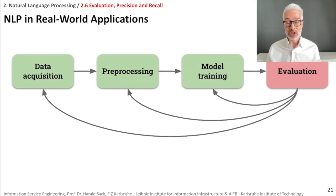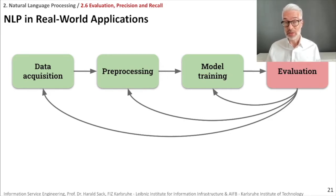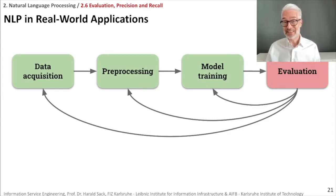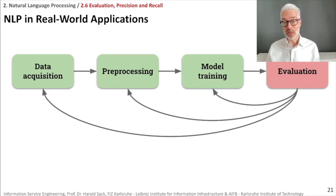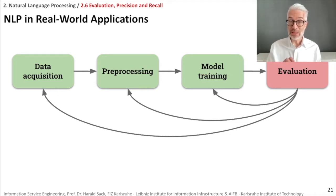If we are looking at natural language processing experiments or real-world applications, there is a cycle of processes going on which starts usually with the data — some documents or document corpora in natural language. You have a specific task to fulfill. Usually you can't take these texts as they are, so you have to pre-process them — for example, get rid of line feeds, punctuation, normalize the text, or filter it in a specific way.